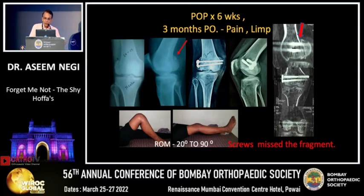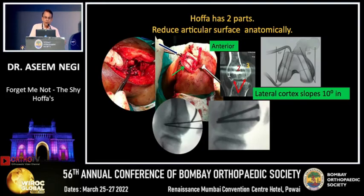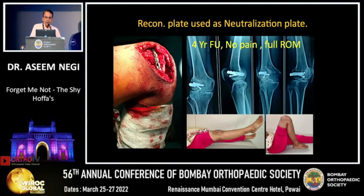This young girl was treated with screws, plastered for six weeks, and had 20 degrees of fixed flexion deformity and only 70 degrees of flexion. CT showed the screws had missed the fragment, passing through the intercondylar notch. We did an open reduction — the Hoffa has two parts — articular congruity was restored, lag plated, and four years down the line she is a state-level kabaddi player.